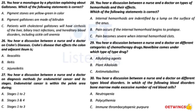Gallstones are formed due to an imbalance in the composition of bile, resulting in hard stones made of pigment or crystallized cholesterol, or a mixture of the two. They can range in size from as small as a sand grain to as large as a tennis ball. There are two types of gallstones. Patients with pigment stones have cirrhosis of the liver, biliary tract infections, and hereditary blood disorders including sickle cell anemia. Pigment stones tend to be dark brown or black. Cholesterol stones are formed as a result of bile with too much cholesterol or bilirubin and not enough bile salts, and are usually yellow-green, the most common type.